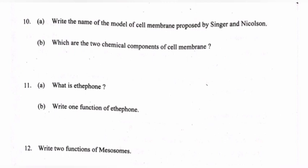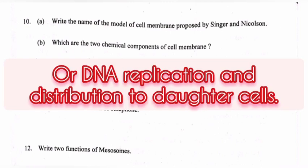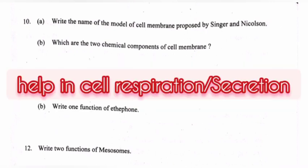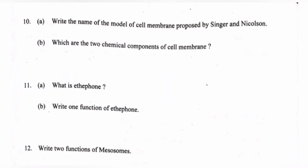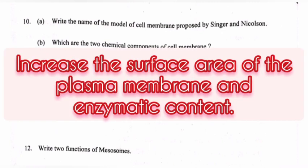Write two functions of mesosomes. Answer: 1) cell wall formation; 2) DNA replication and distribution to daughter cells; 3) help in cell respiration; 4) secretion; 5) increase the surface area of the plasma membrane and enzymatic content. Write any two.